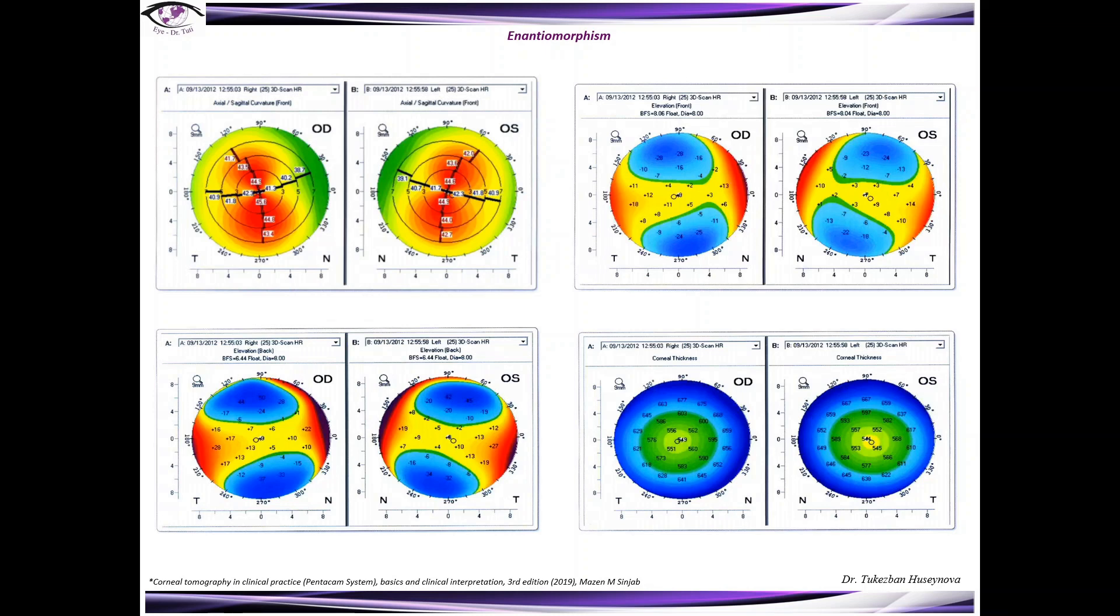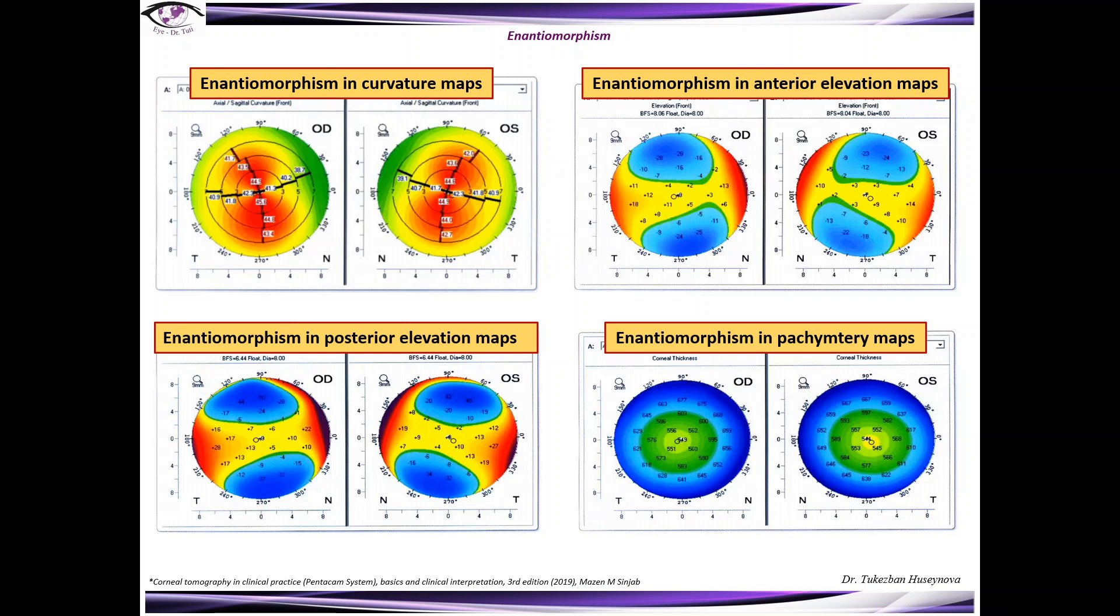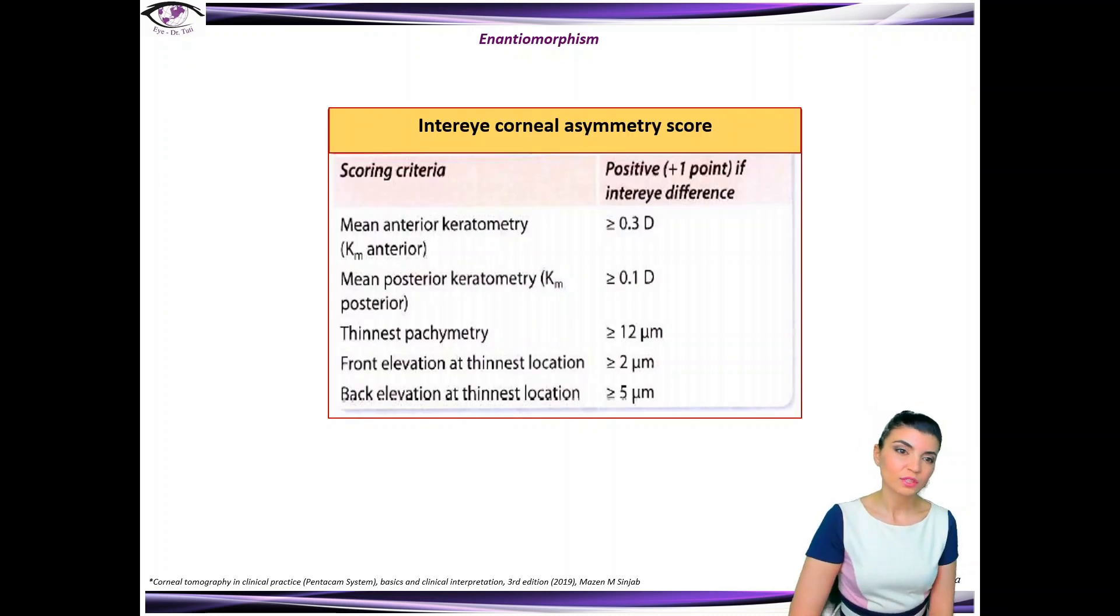Here's some clinical samples of enantiomorphism. Enantiomorphism in curvature maps, in anterior elevation maps, in posterior elevation maps, and in pachymetry maps. You can see this beautiful reflection of right eye and the left eye. In this slide I will continue with inter-eye corneal asymmetry score.